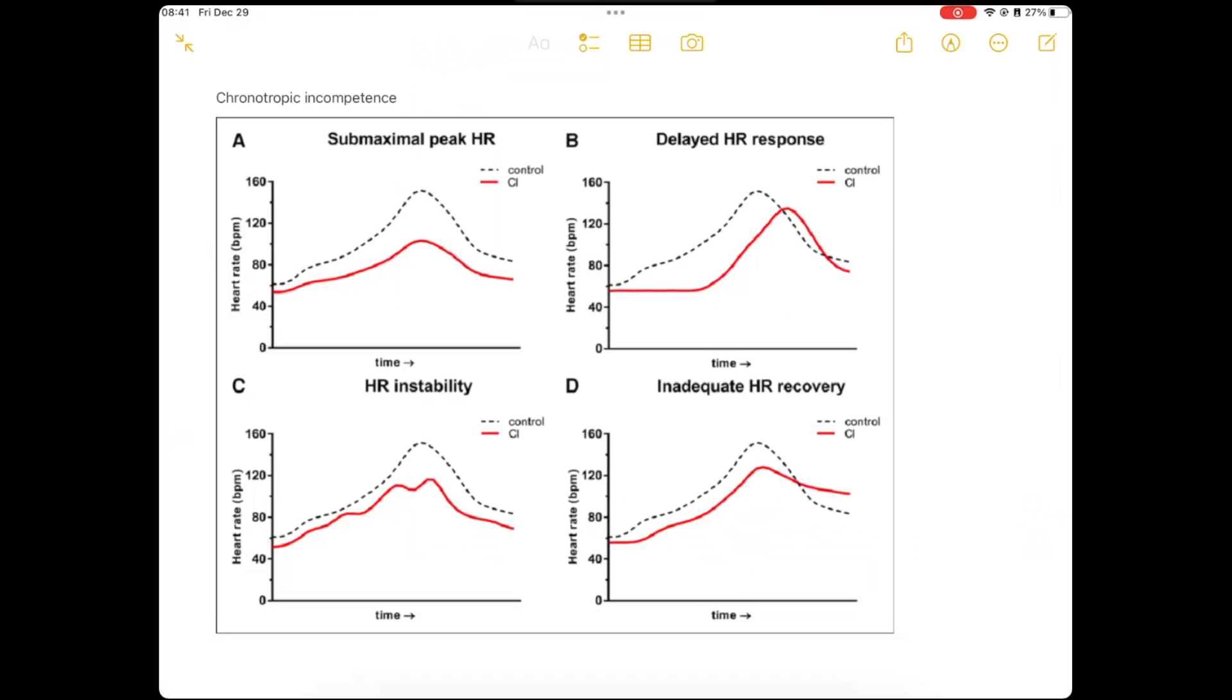It's called chronotropic incompetence. Chronotropy - chron, chronological, that root chron is time clock. So chronotropic incompetence means that the sinus node is unable to either increase or decrease the rate appropriately with exercise.